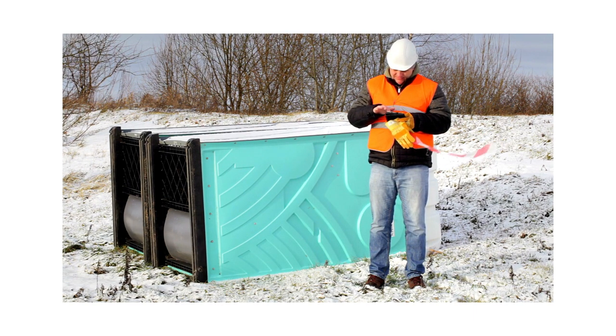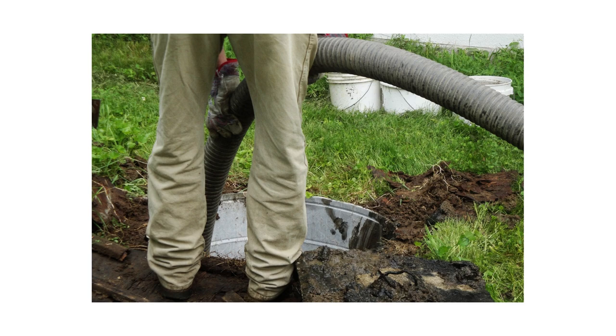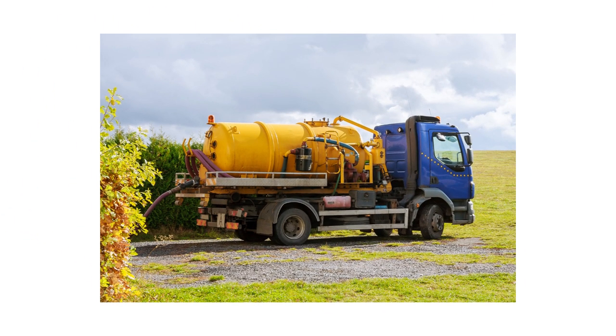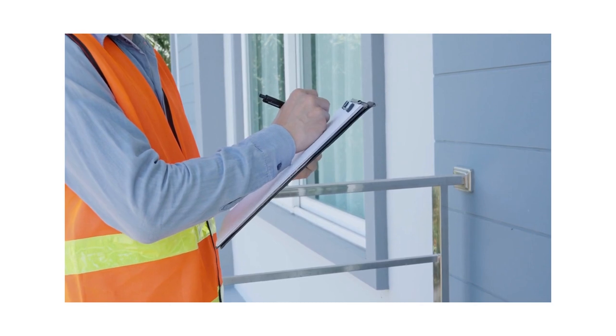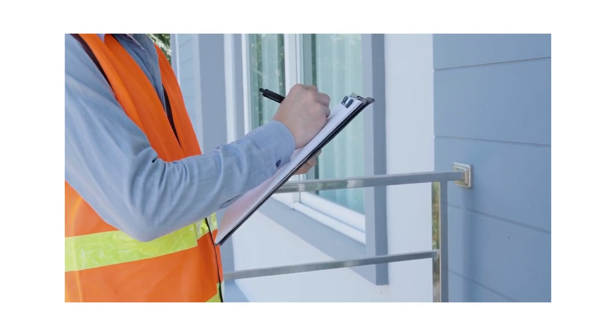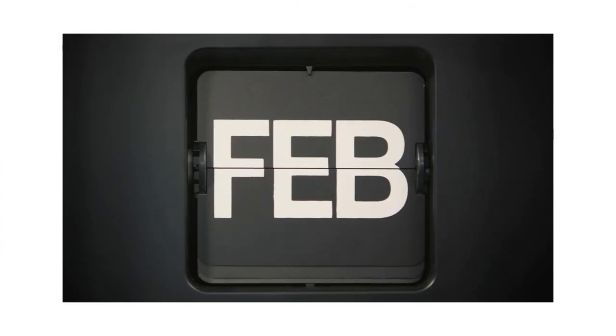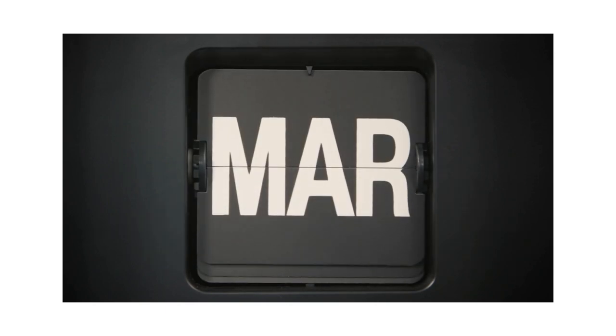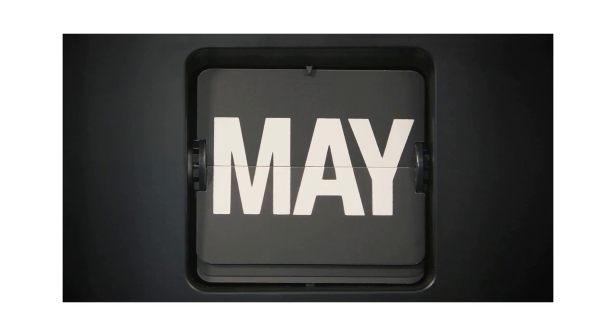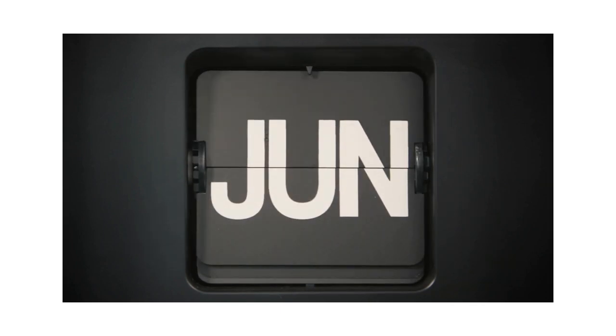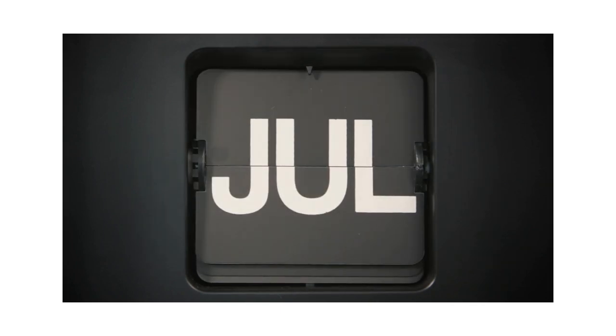Pump and inspect regularly. Pumping and inspections are like a spa day for your septic system. Pumping gets rid of solid waste that builds up over time, and inspections catch any sneaky issues before they blow up. How often you do this depends on a few things like your tank size, how many people are in your house, and how much wastewater you're making. A good rule to live by is to get an inspection every one to three years and a pump every three to five years.